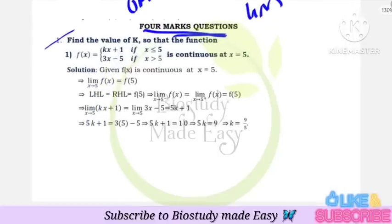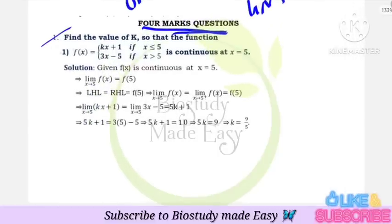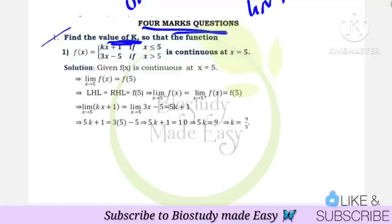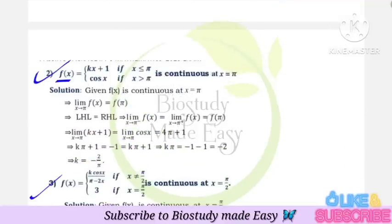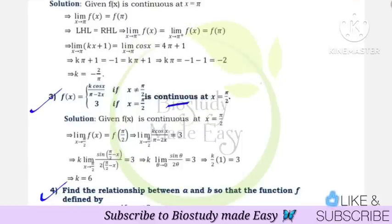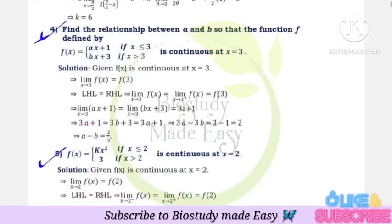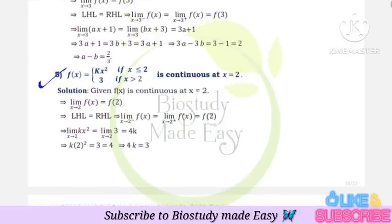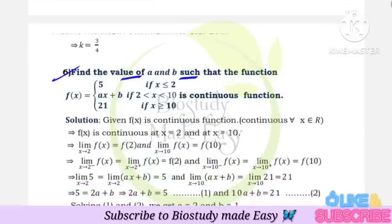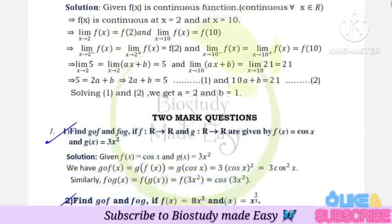Find the value of K — this is a 4 mark question. This is all about differentiability — continuity and differentiability, 4 marks with answer. Relationship between A and B and find the value of K — this is also 4 marks.